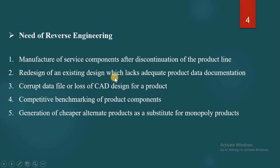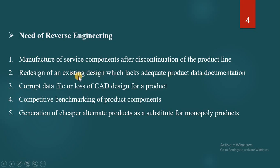Number 2: Redesigning an existing component which lacks adequate product data documentation. If a company has not maintained adequate product data in the past but wants to redesign that component, Reverse Engineering makes this easier. Nowadays companies use CAD modeling tools to preserve product data, but products manufactured 5-10 years before may not have available data, so Reverse Engineering is needed. Number 3: Corruption of a data file or loss of CAD design of a product.